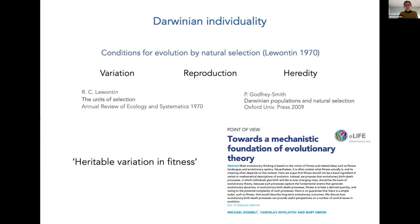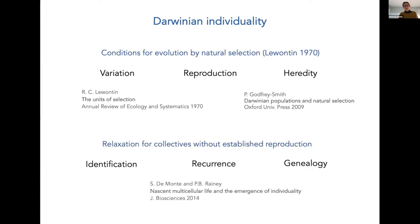The solution was to say: you know what fitness is if you know the birth and death rates, but that's not really enough for certain cases. This is the reason why a few years ago we proposed to use other criteria — equivalent in most cases to variation, reproduction, and heredity — to identify what are the units subjected to natural selection. Basically, you need a criterion to define what is a unit, this unit has to recur over and again in time, and there must be a genealogical structure that allows you to evaluate heredity.